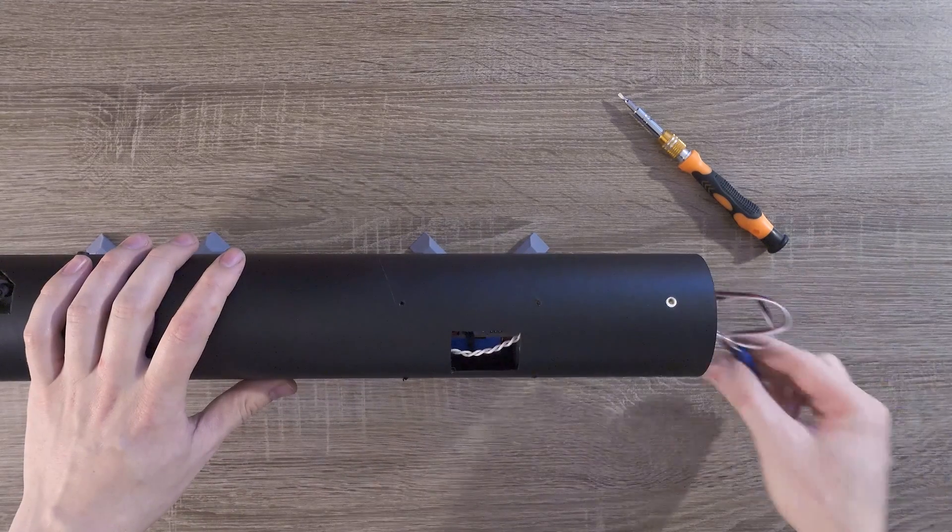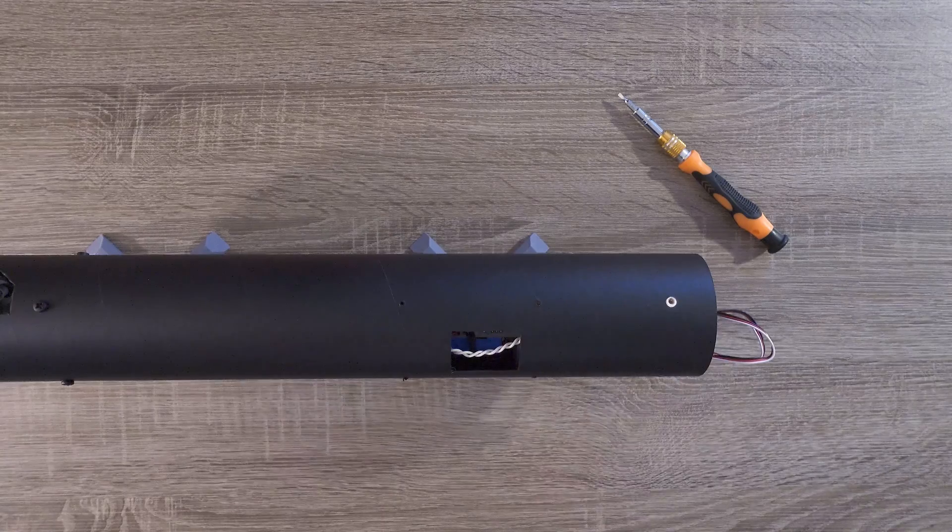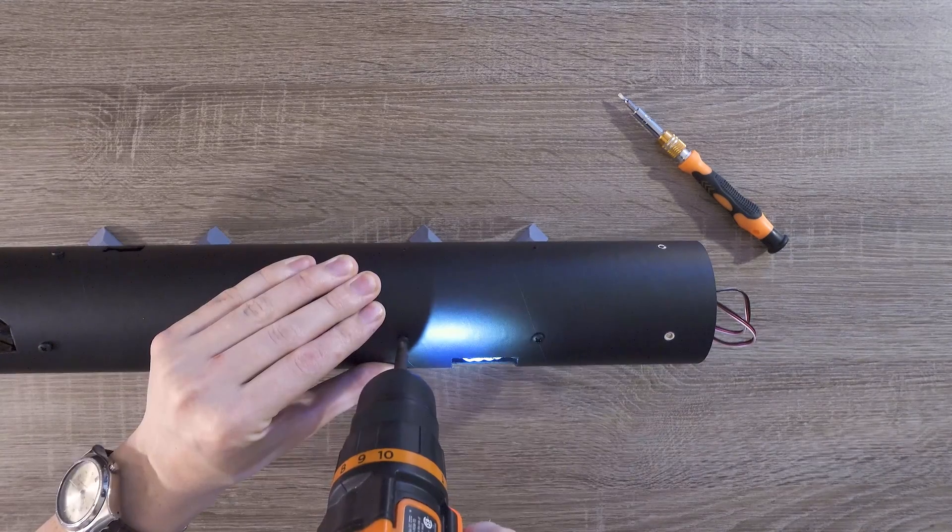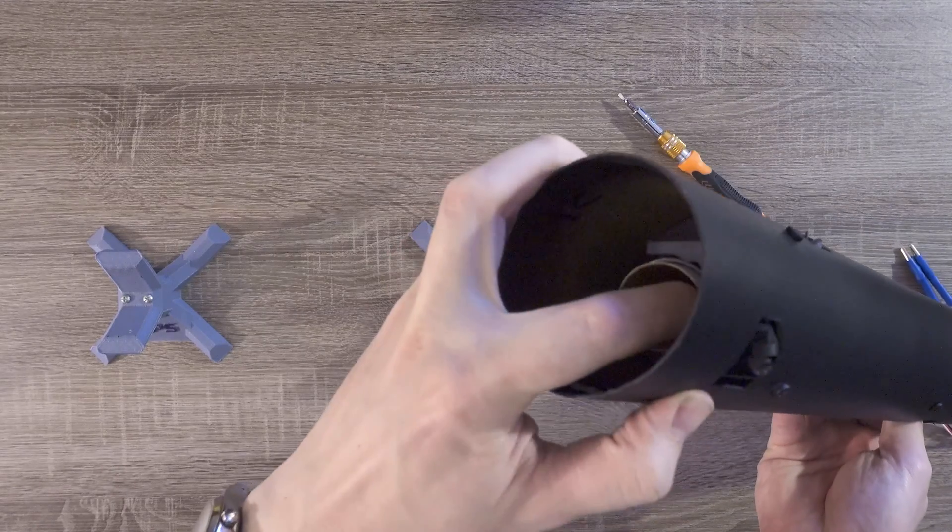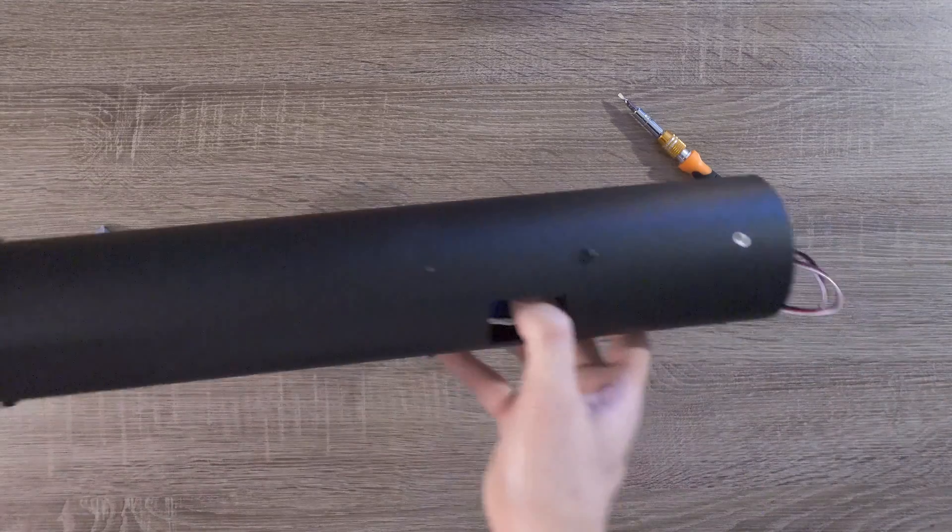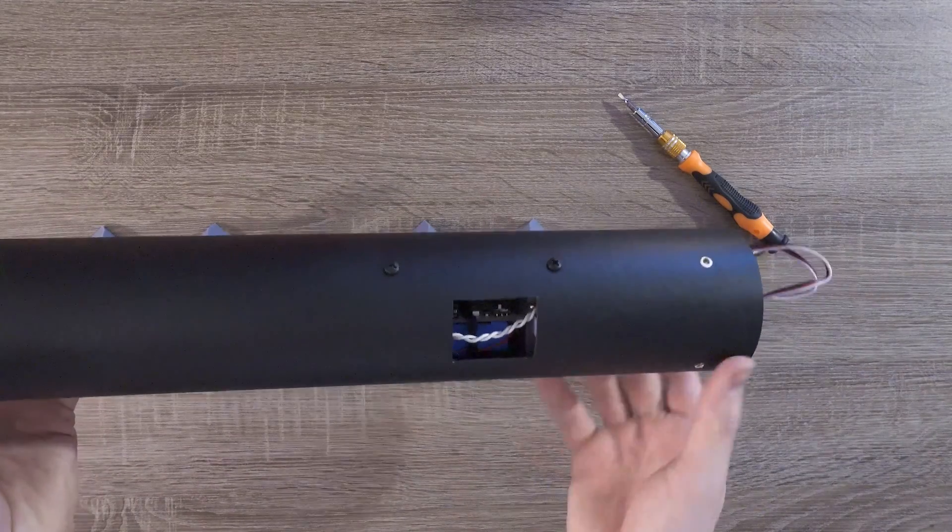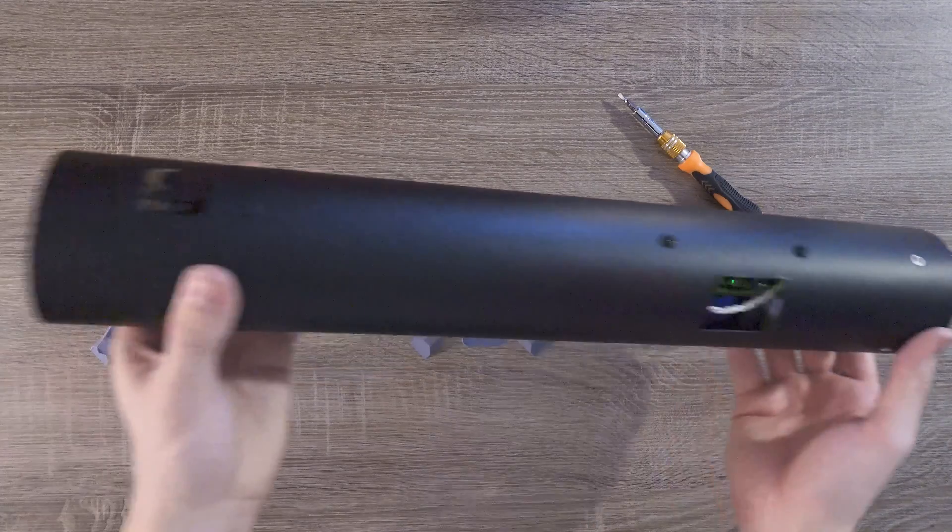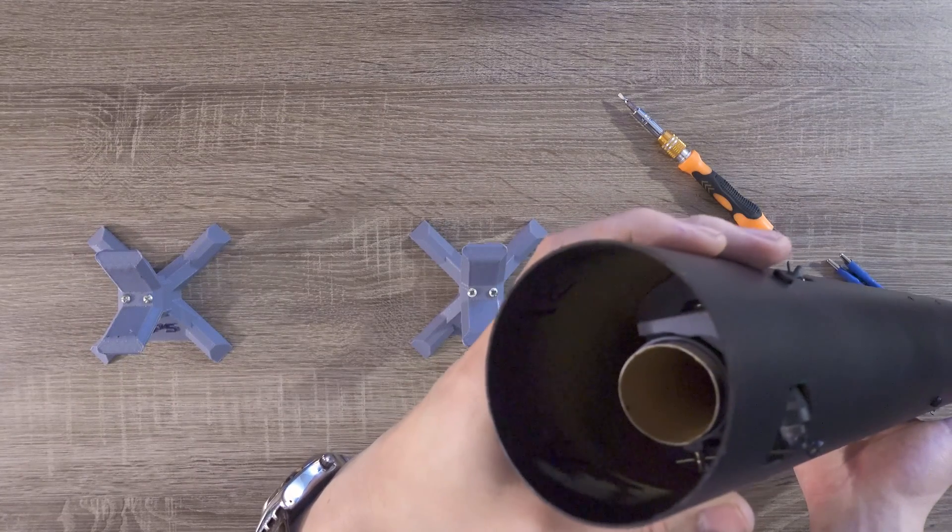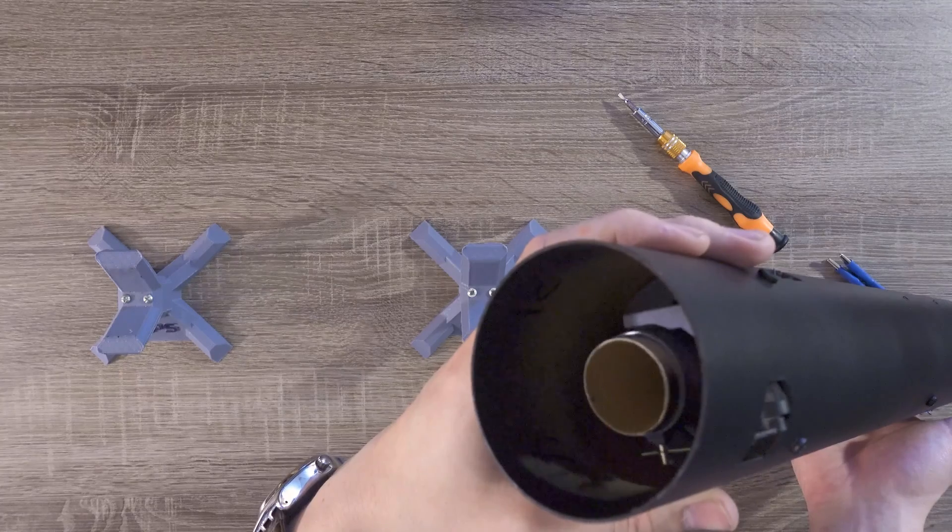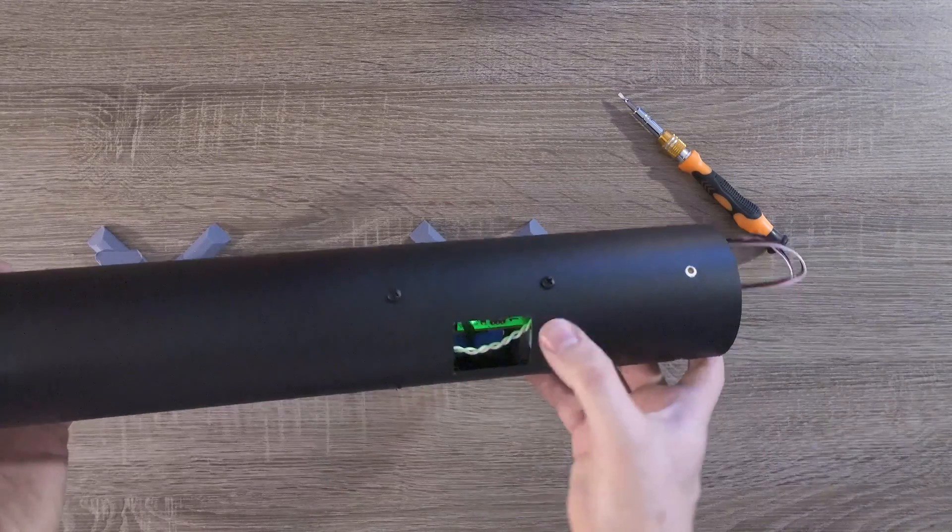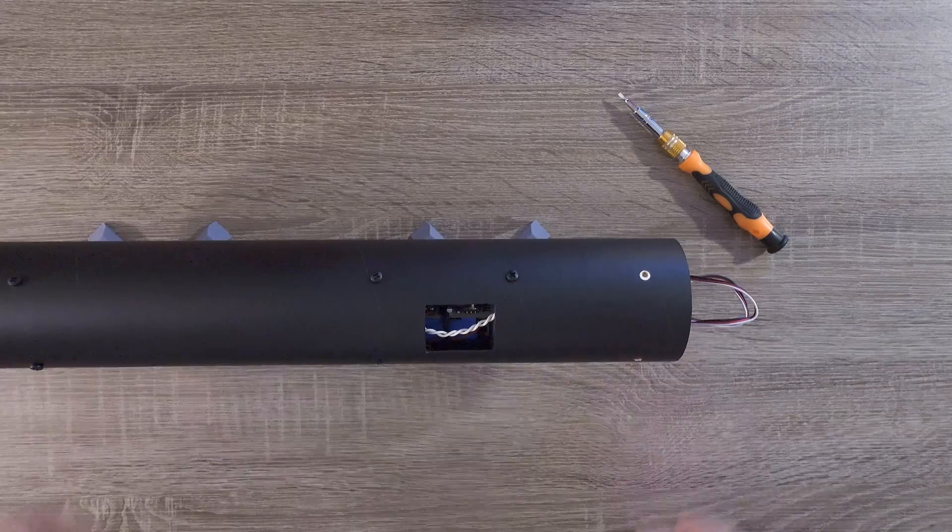Now we can screw the flight computer in. I only use two screws for this. I'll use my finger here to move around the thrust vectoring mount and make sure there are no jams. Then we can boot up the flight computer. Startup looks good to me, so let's turn the computer off and attach some parachutes.